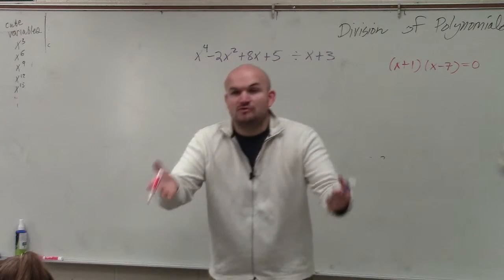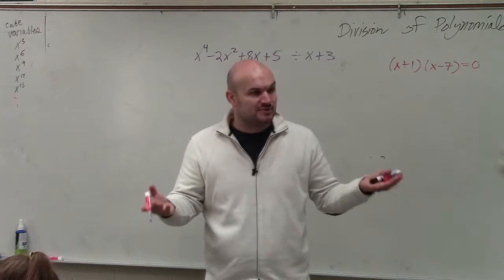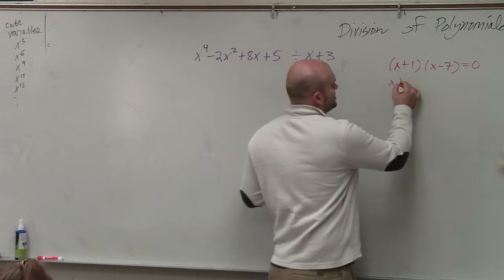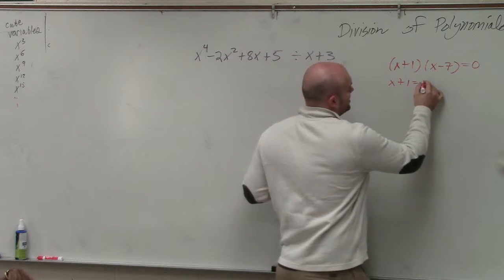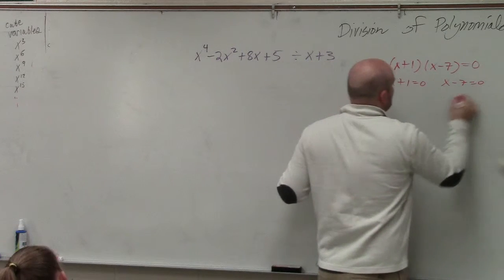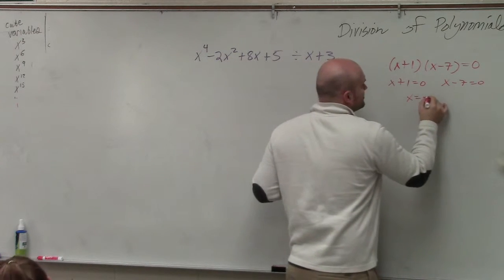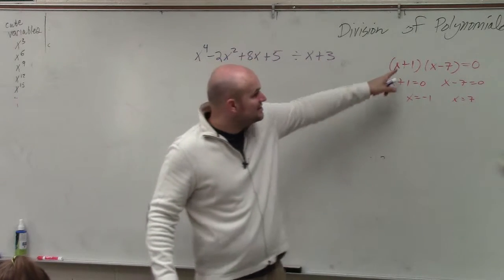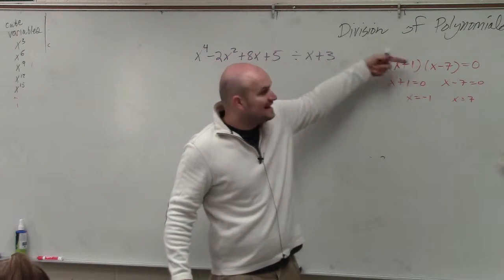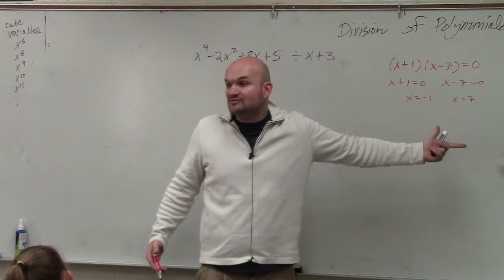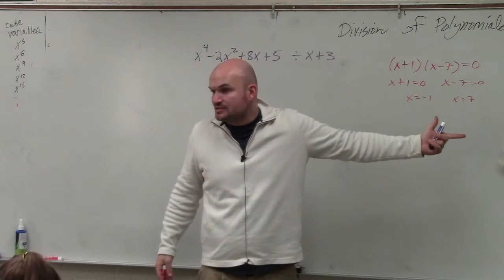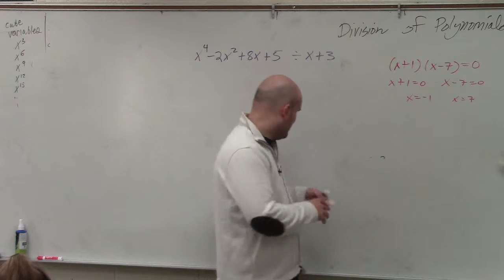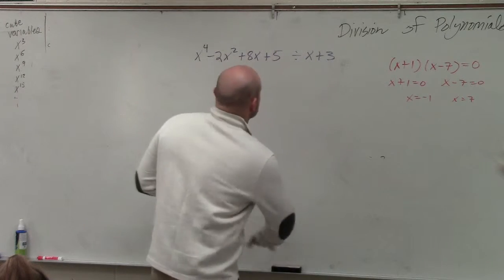We can solve by using the zero product property to find the solutions, or the zeros, or the real x-intercepts. We'd say x equals negative 1, x equals 7. So when we have our factors set equal to 0, we can solve to find the zeros, or the real x-intercepts, or the solutions of the equation — whatever the question is asking.